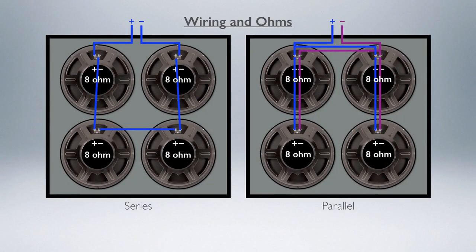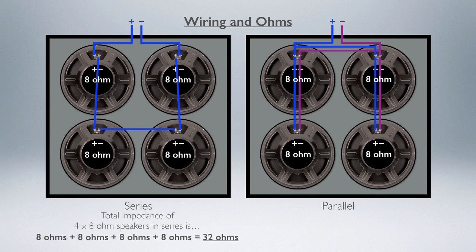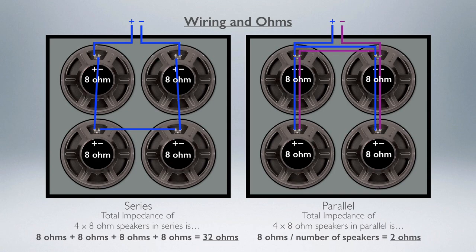Let's do the same thing with a four-by cabinet. The total impedance of four 8-ohm speakers, you just add them all up—that's 32 ohms. Where in parallel it is that 8 ohms divided by the number of speakers, which is four, ends up being 2 ohms.